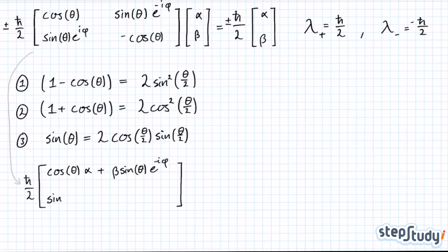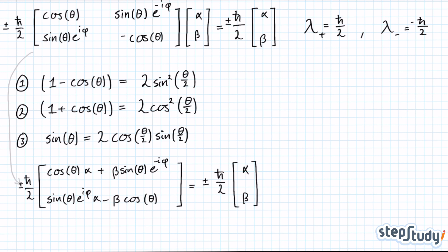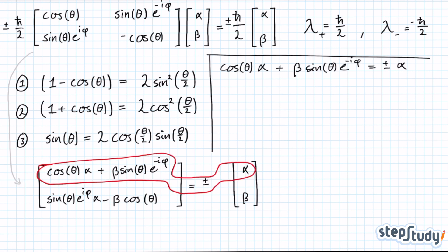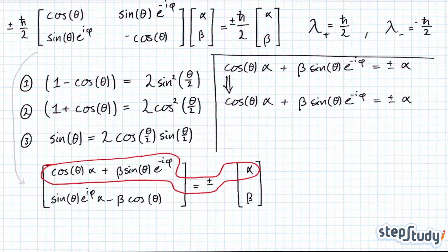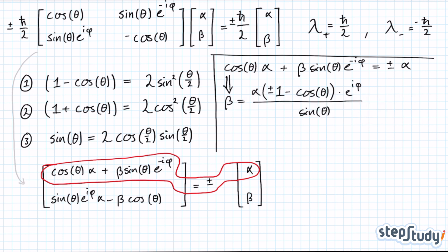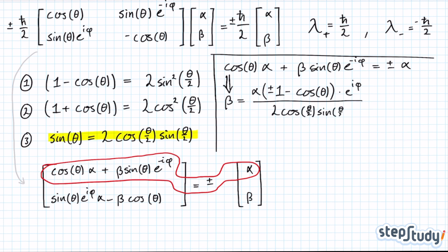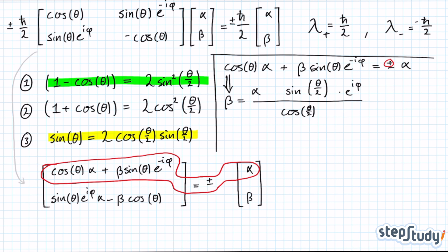Alpha can simply be read off when setting up the linear system of equations, and beta can be derived from the equation involving alpha. Let's start by using the positive eigenvalue. We need to make use of those trigonometric identities, and after simplifying, we get this expression for beta.